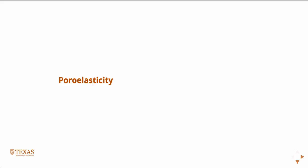We're going to pick up where we ended last time. We were talking about poor elasticity, or more specifically at the end of class, we were talking about viscoelasticity, because basically poor elastic materials are viscoelastic materials.